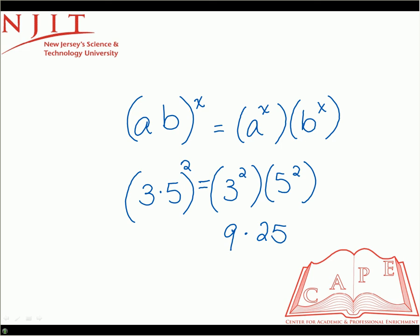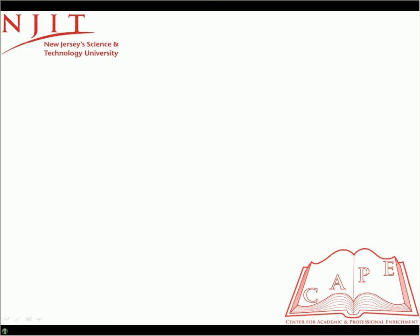And the final rule of exponents deals with the inverse. Now inverse, we've already discussed in a different tutorial, can be expressed as if you have a number a, its inverse is simply 1 over a.